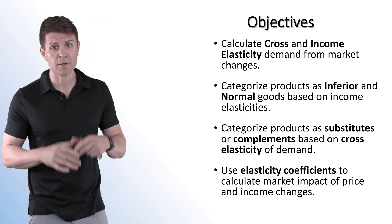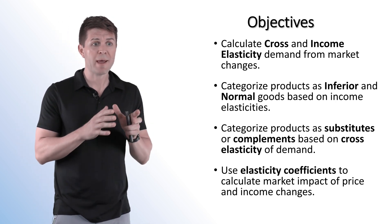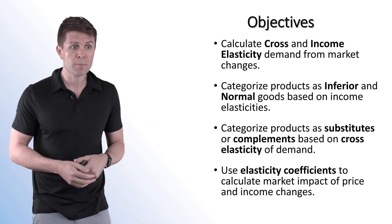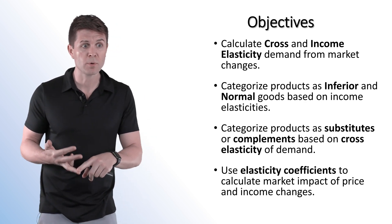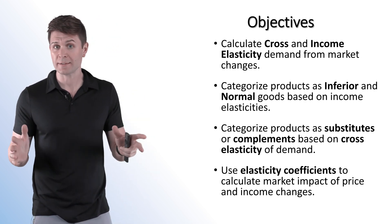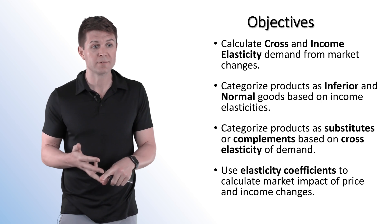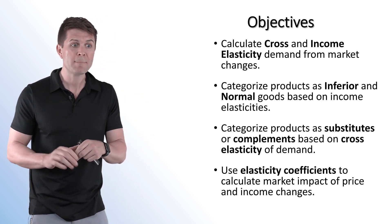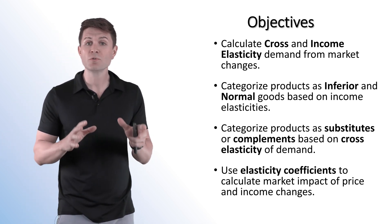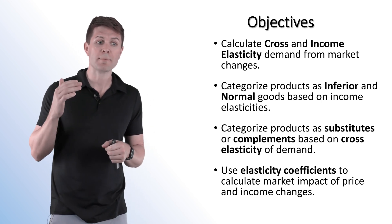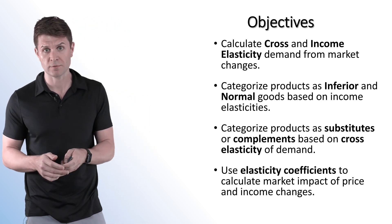The objectives for today are: be able to calculate cross and income elasticity of demand from market changes; categorize products as inferior and normal goods based on income elasticities; categorize products as substitutes or complements based on cross price elasticities; and use these elasticity coefficients to calculate the market impact of price and income changes.